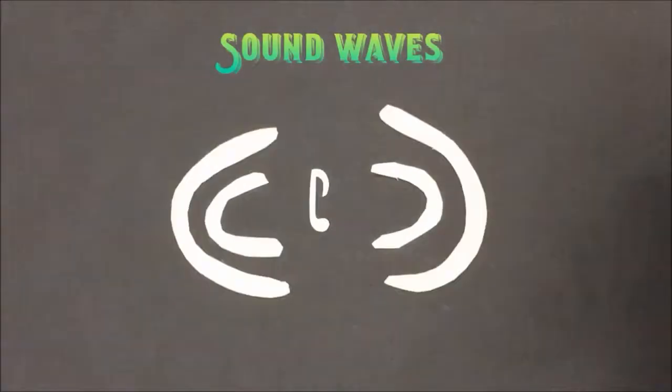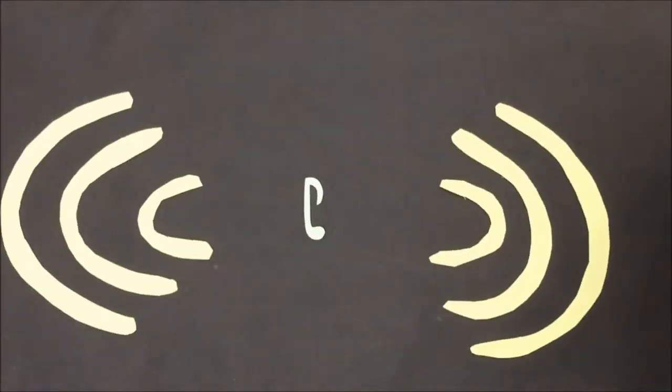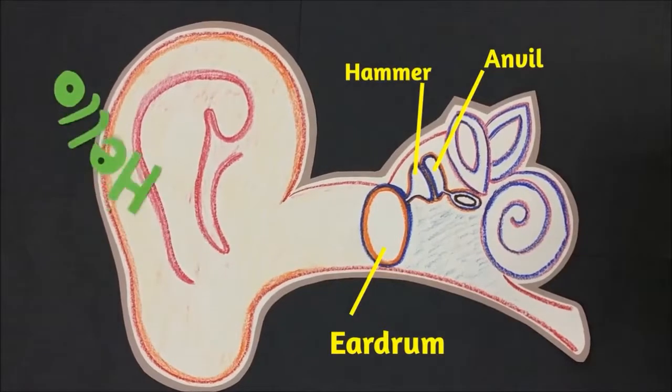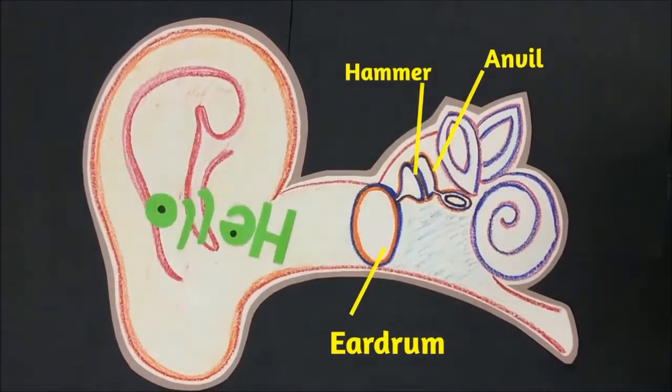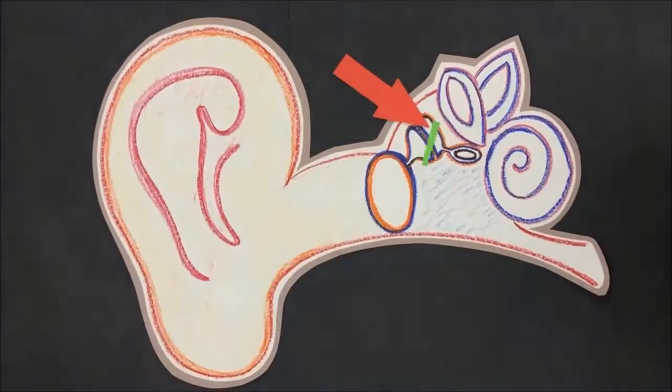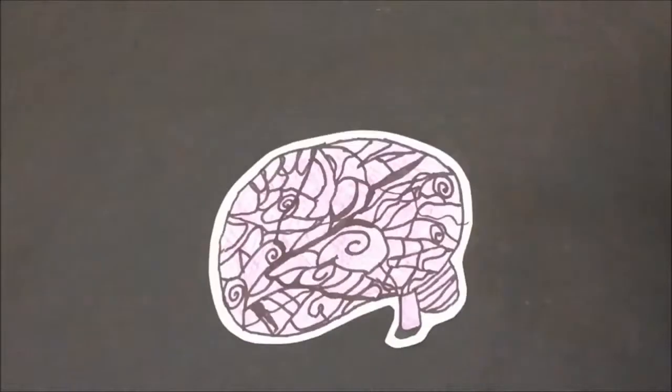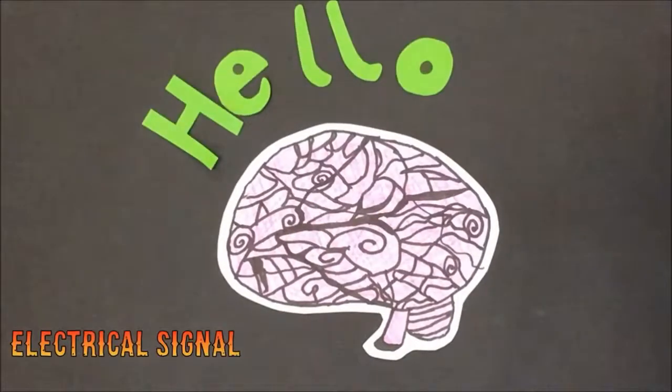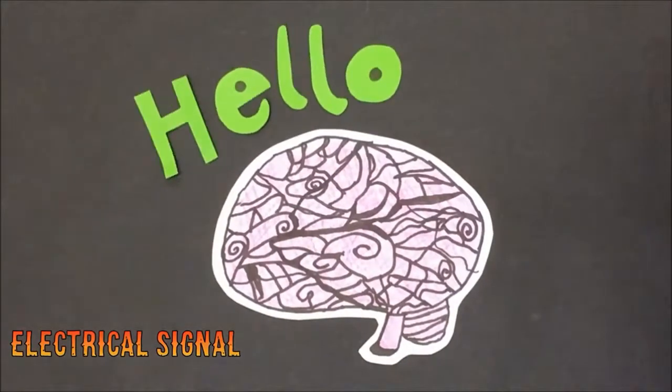Sound waves are caused by a moving object making the air vibrate. Sound waves travel to your eardrum and make it vibrate. When the eardrum vibrates, it makes a tiny bone called the hammer hit another tiny bone called the anvil. That vibration is sent to your brain as an electrical signal. The brain recognizes that signal as a sound.